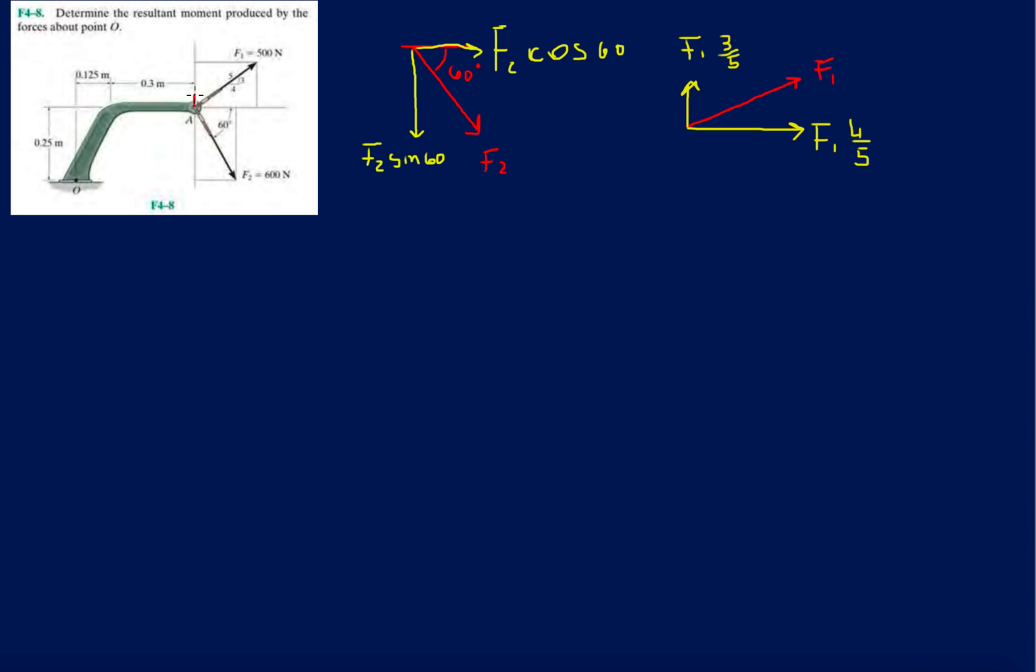So for the y component, if you look at where I'm drawing the red line, this is kind of like a line of action. F2y and F1y are both in this same line of action, this red line, which means that they're both going to be multiplied by the same distance in order for this red line to come over and intersect the origin. So that's going to be this distance over here. And we know that distance is going to be 0.3 plus 0.125, which is 0.425 total.